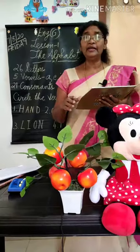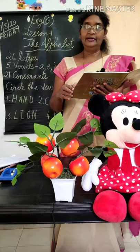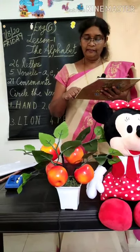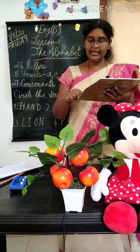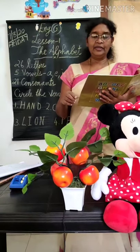The next one is Umbrella. The beginning letter U is a vowel sound. U, M, B, R, E, L, L, A — Umbrella.